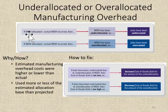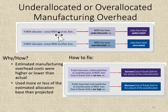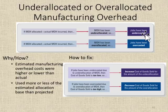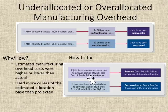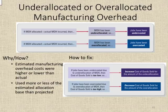The opposite can happen as well, where we under-allocate — the manufacturing overhead allocated comes in at less than what was actually incurred. We under-costed our jobs, which is equally bad because we thought our cost was less than it actually was. In that case, since cost of goods sold was ultimately too low, we have to increase cost of goods sold by the amount of the under-allocation.